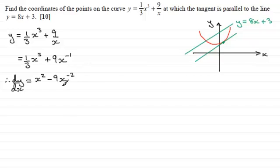I'm going to write this in a simplified version. This is minus 9 multiplied by 1 over x squared. 9 times 1 over x squared gives us 9 over x squared.